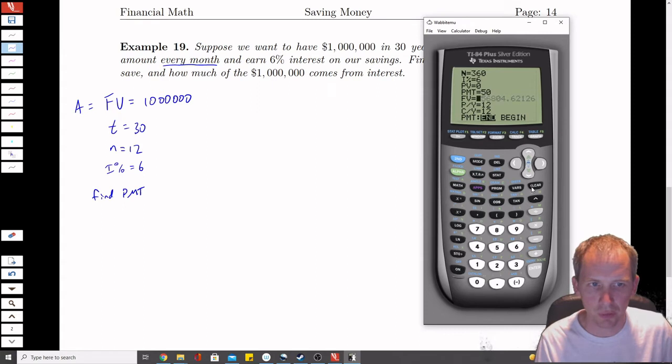The final value, or future value, is the $1 million. Be careful that you enter the correct number of zeros. And because it's monthly, we don't need to change this from the last problem that we did.